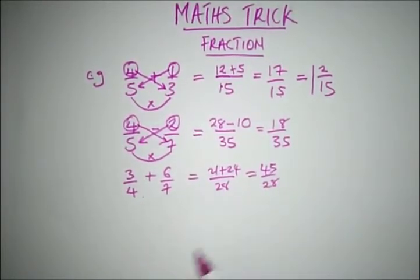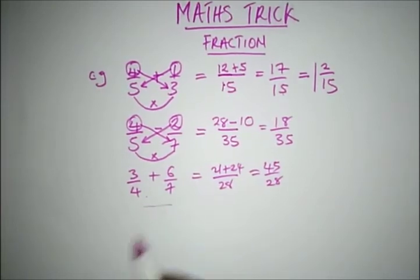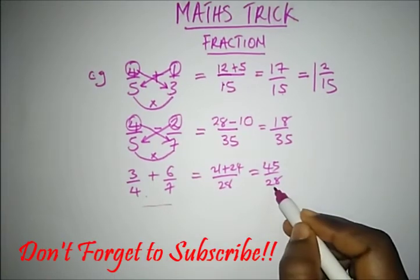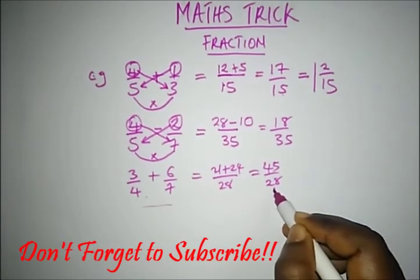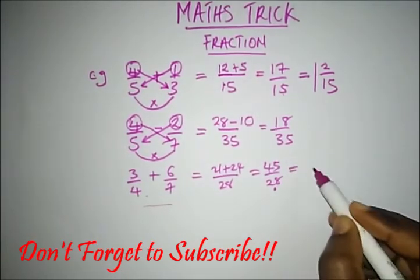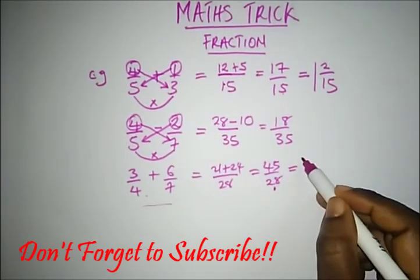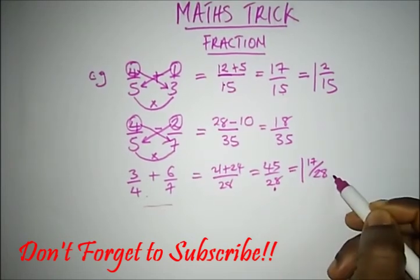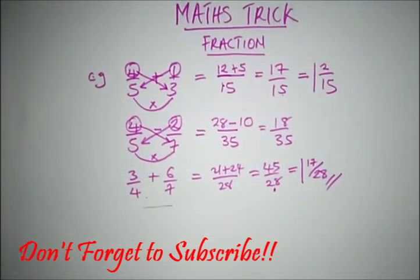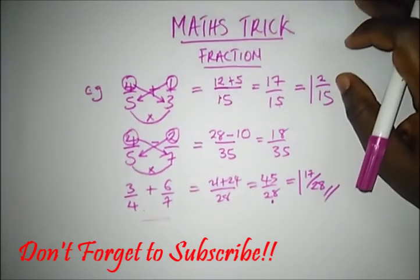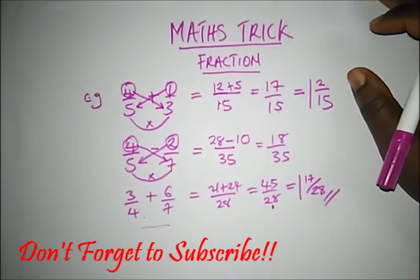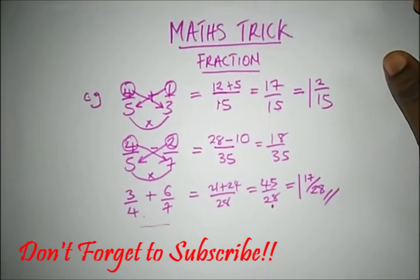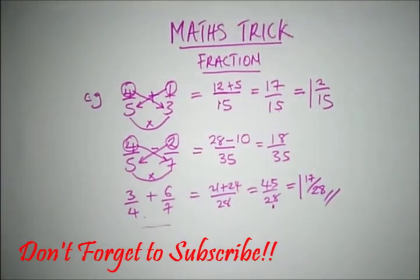You can see you don't need to look for your LCM, draw your line and all. This is quite fast. This is a math trick that will help you in your exams like WAEC and also in JAMB. Noting that this is also an improper fraction, we'll convert to a mixed fraction. 28 and 45 would go 1 times remainder 17 over 28. Thank you for staying tuned to today's Friday. See you next Friday. Bye. You are destined to win.